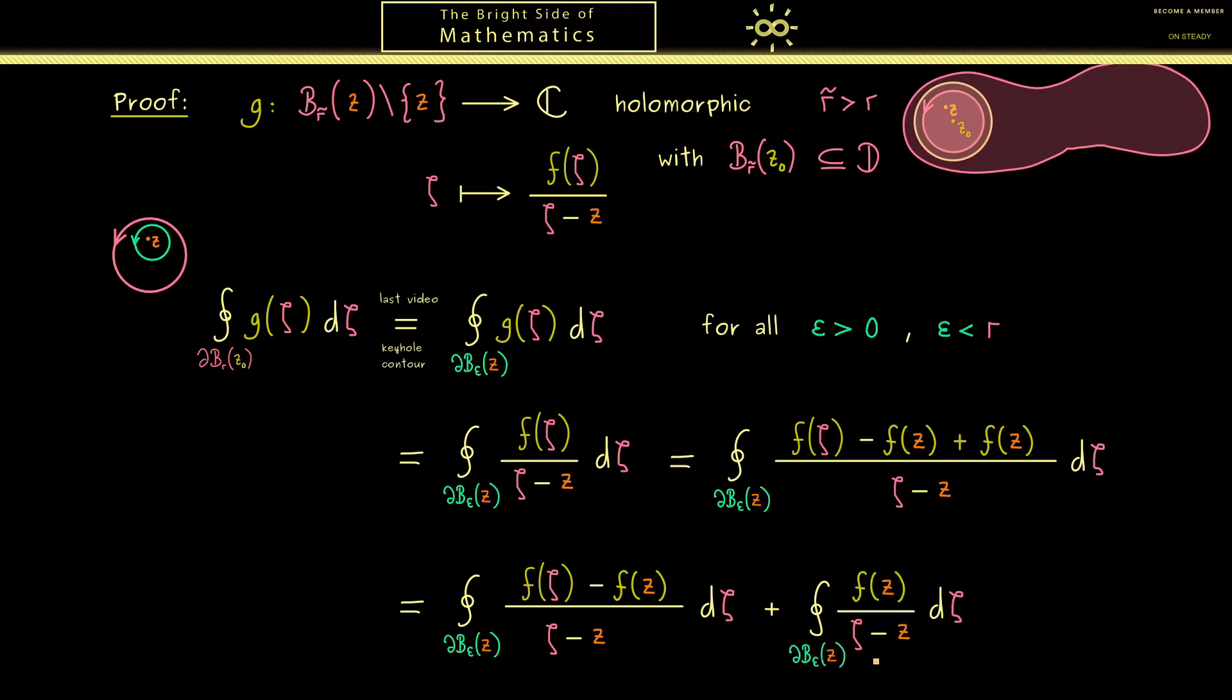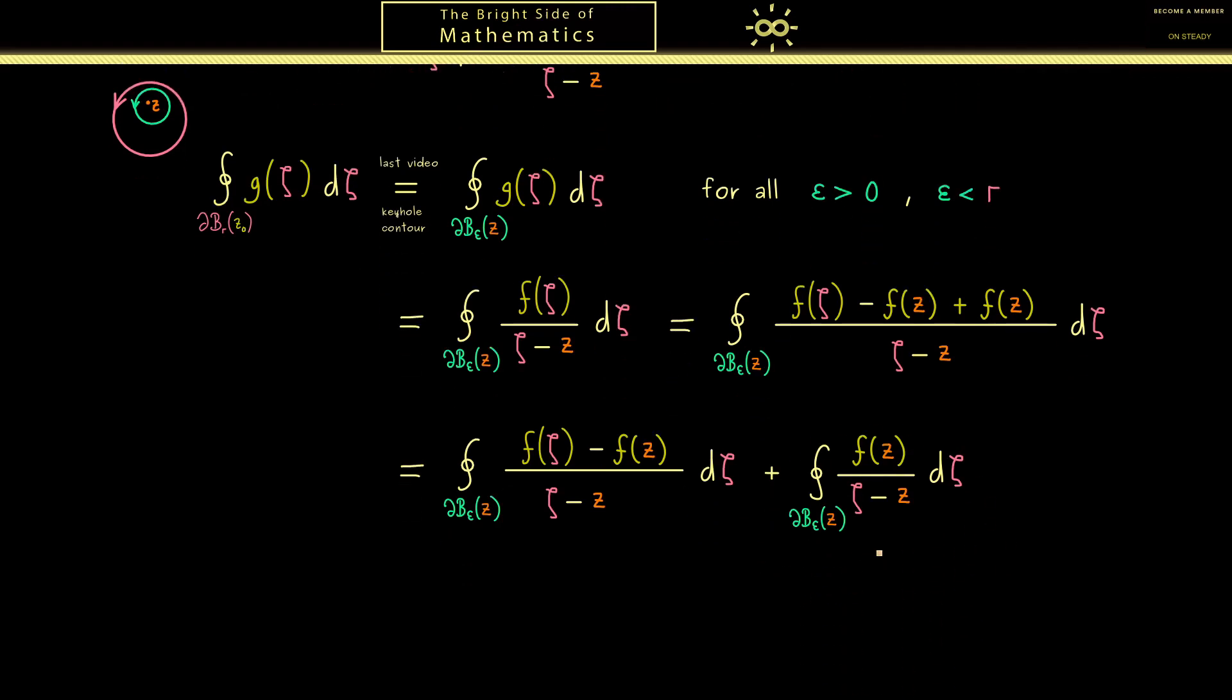So please note this one now is different from the original integral because the numerator is constant. And in fact, with that, you know we don't have any problems calculating this integral. Namely, it's simply 2πi times the constant f(z). On the other hand, the first part here can be made very small if epsilon is chosen small. For this, of course, we use that f is complex differentiable at the point z. And then together with the standard estimate for a contour integral, we get our result.